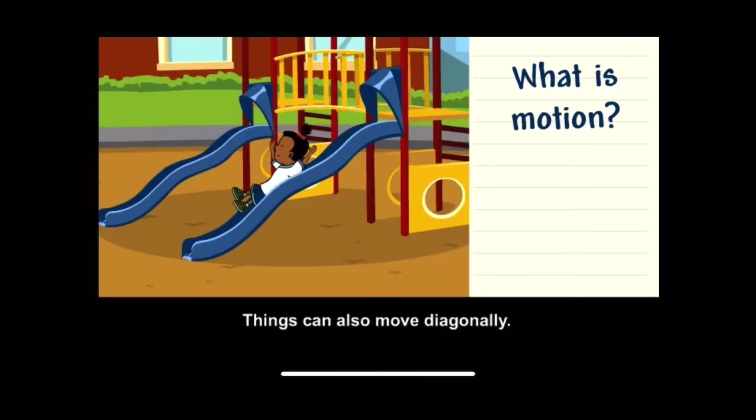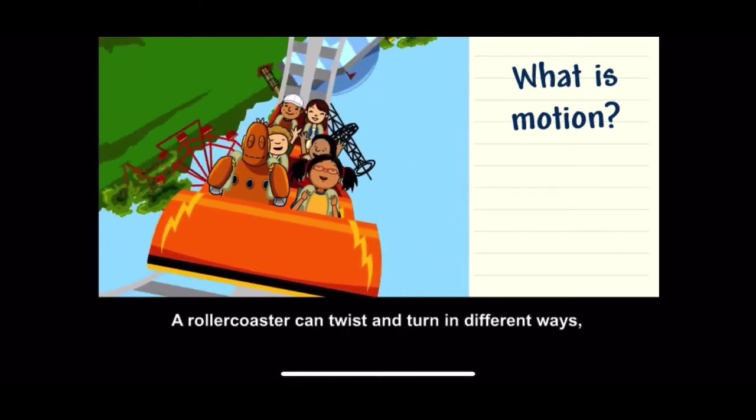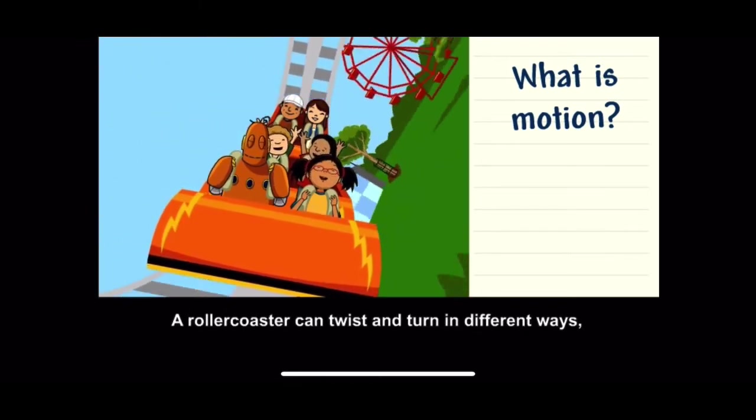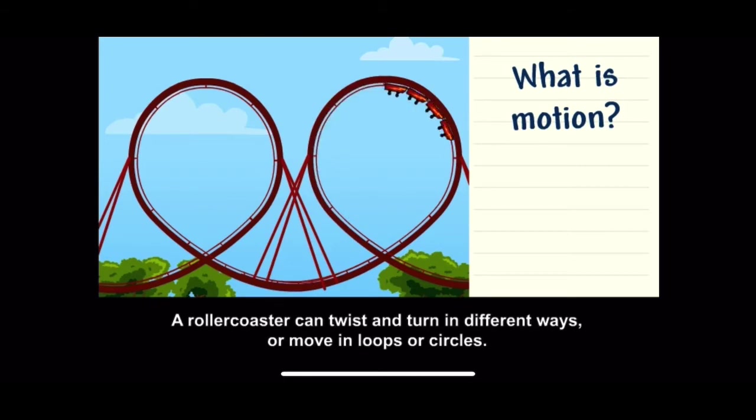Things can also move diagonally. A roller coaster can twist and turn in different ways or move in loops or circles.